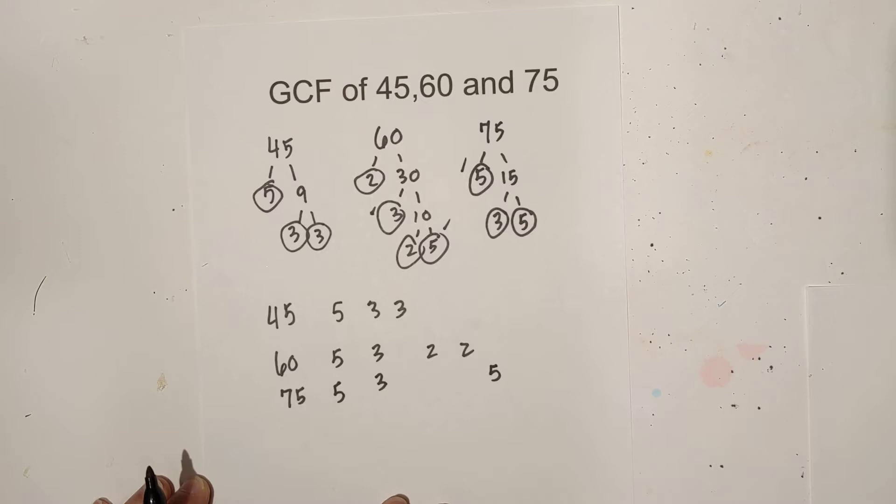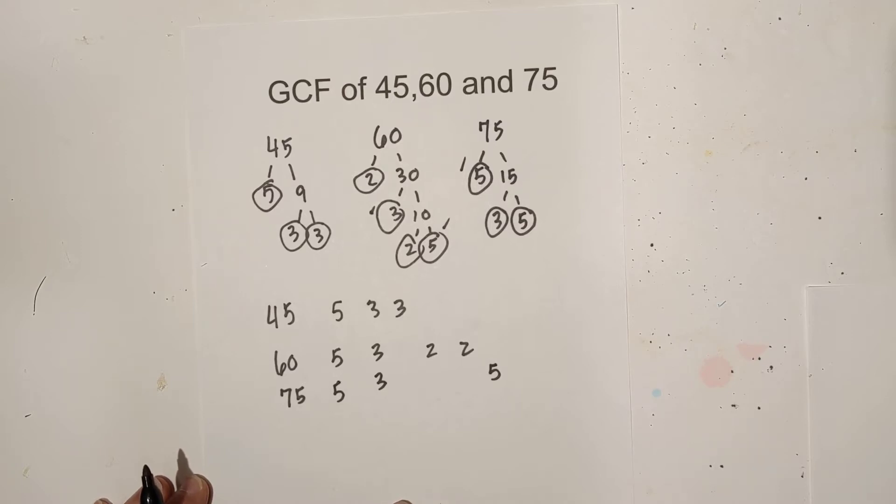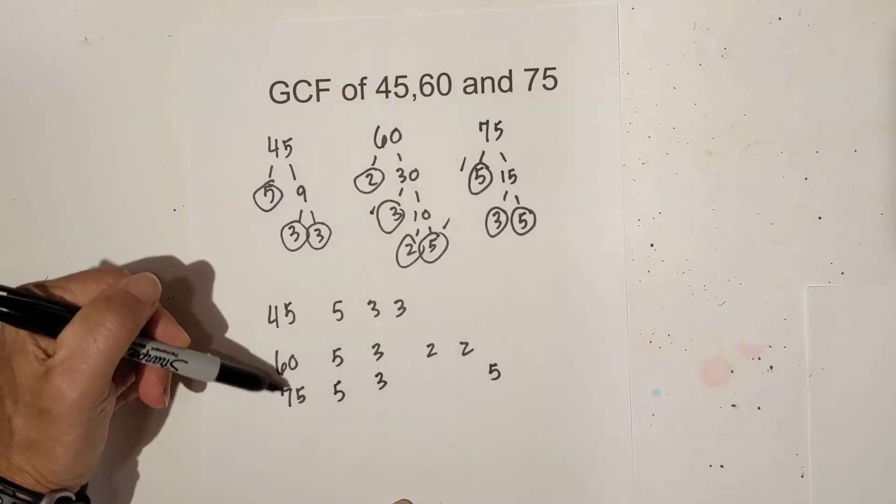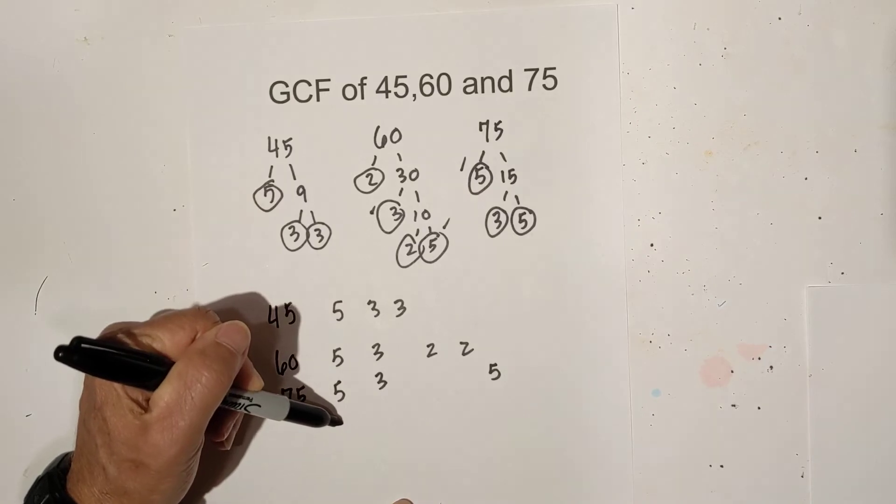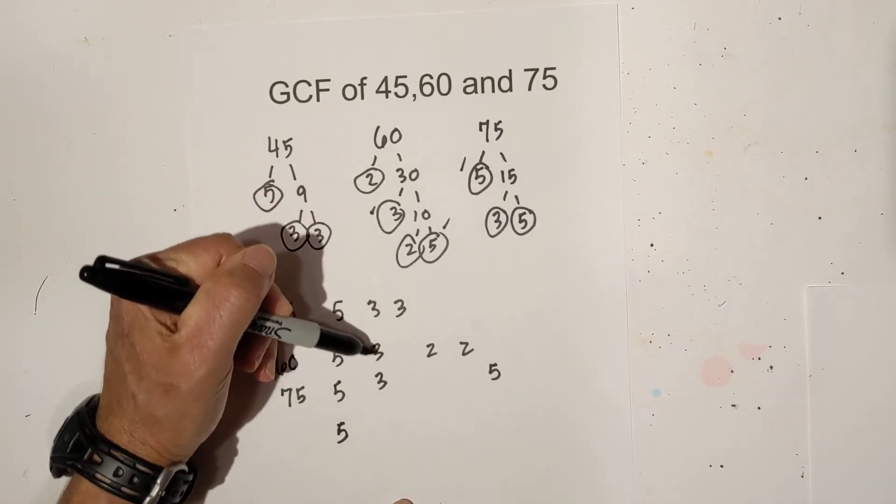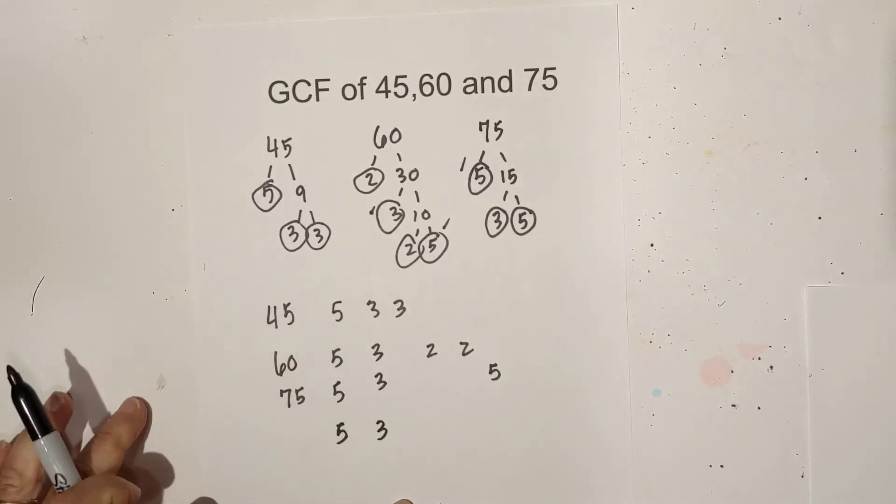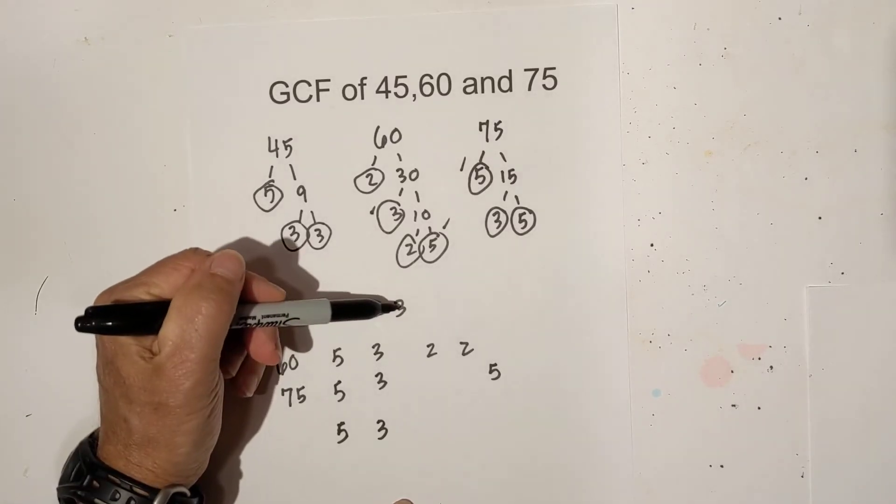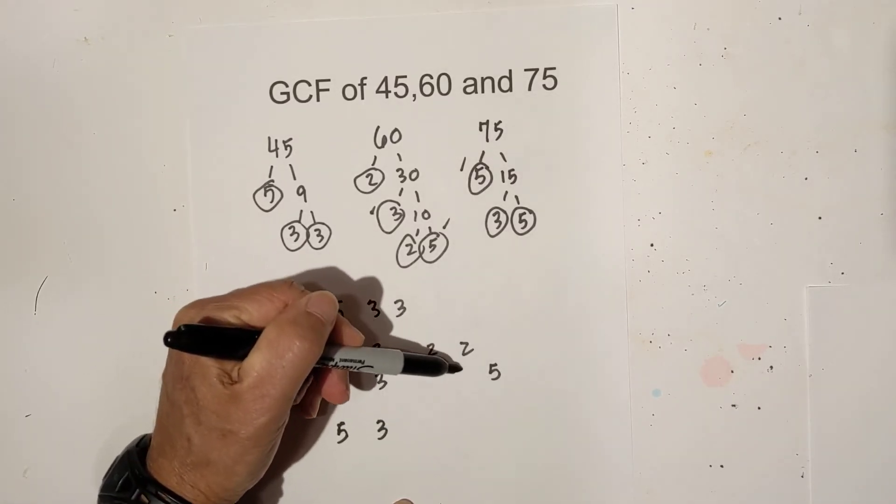Now for the greatest common factor all you have to do is you're looking for triplets. Since you're looking for 3 numbers you do triplets. So I'll bring down a 5, I'll bring down a 3. This is why I like the chart. I don't have a triplet here nor here, here or here.